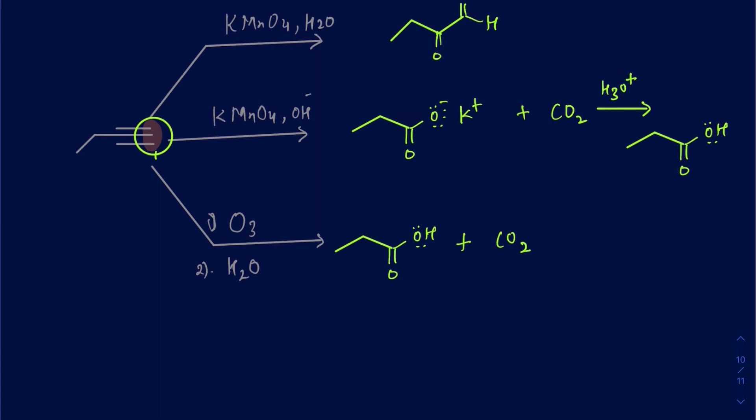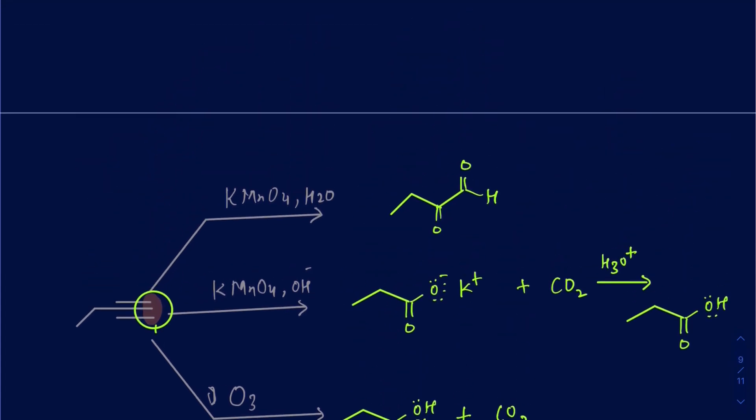Think about this. This is one of the ways you can actually lose a carbon in the chain. Alkynes are used to make a carbon-carbon bond using SN2 reactions because you can deprotonate that terminal alkyne and use that as a nucleophile. But now you can also get rid of one of those carbons from the chain by running this type of reaction. It's extremely important to know those things.